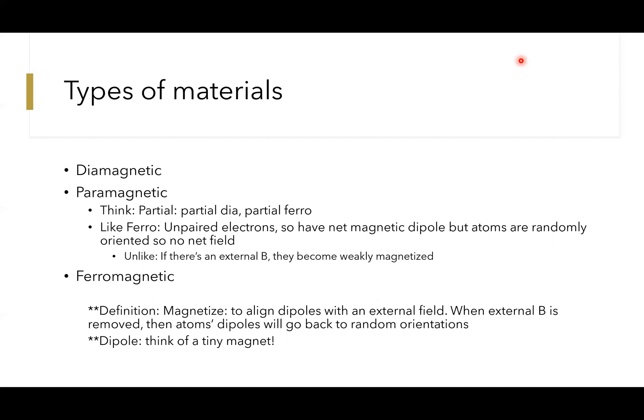It's unlike ferro in that if there is an external B, they do become weakly magnetized. When that external magnetic field is then removed, those atoms' dipoles will go back to whatever orientations they were in, so random orientations essentially.